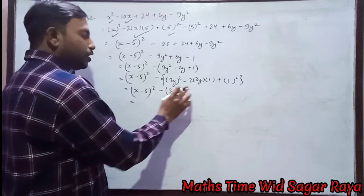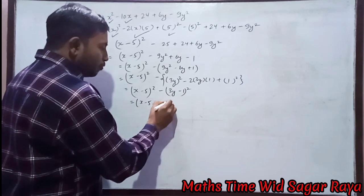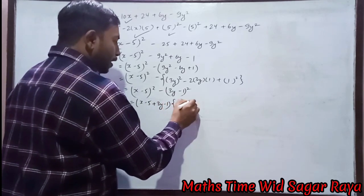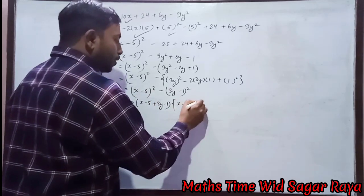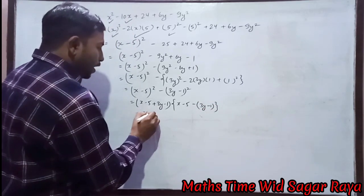So a² - b² means (a + b)(a - b), which gives us (3y - 1) times (x - 5) minus (3y - 1).